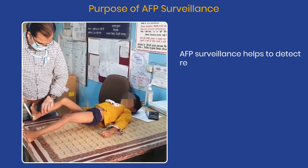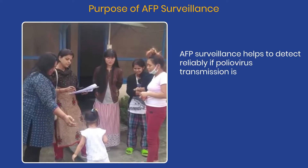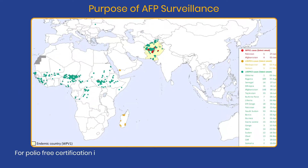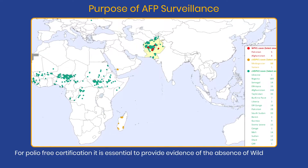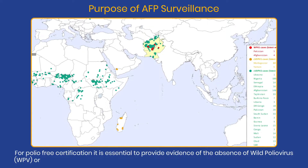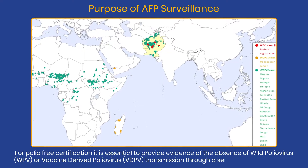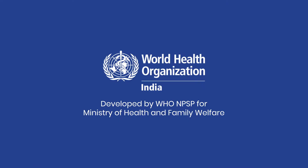AFP surveillance helps to reliably detect if polio virus transmission is occurring. For polio-free certification, it is essential to provide evidence of the absence of WPV or VDPV transmission through sensitive AFP surveillance. AFP surveillance will continue until global polio-free certification is achieved.